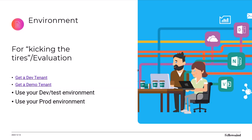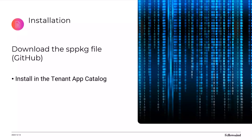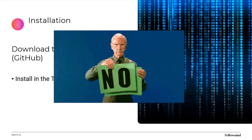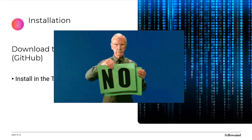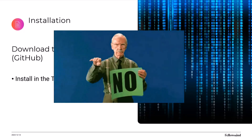And if that's not an option, you can test it using your production environment without making it break, but that is the last option from my point of view. So how do you really start using it? First, you go to the GitHub repository and download the SP package file, then install it into your tenant app catalog. Sometimes that's not going to work because of internal security and internal audit people who are not keen on allowing installs to the tenant app catalog — but we have other ways.